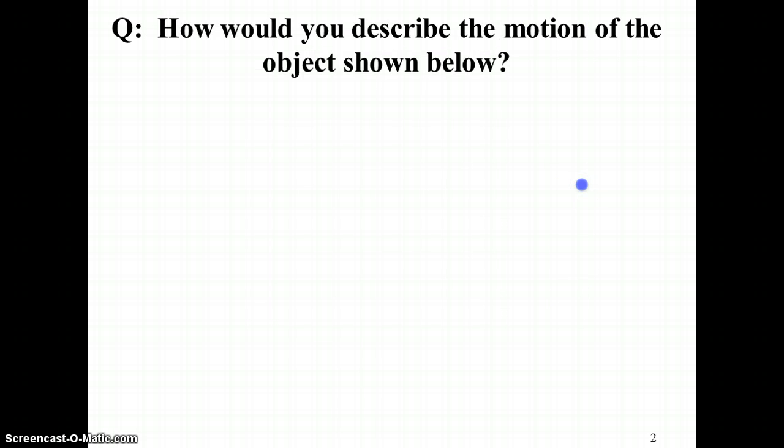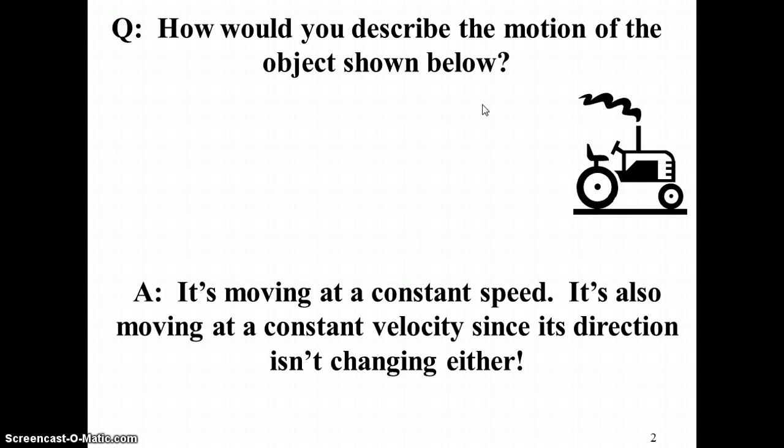For instance, if we had an object moving like this, using plain English, we could describe the motion as being constant speed. It was going the same speed the whole time, also constant velocity since its direction was always to the right.